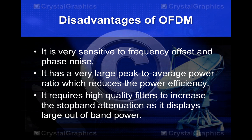The disadvantages of OFDM are: it is very sensitive to frequency offset and phase noise. It has a very large peak-to-average power ratio, which reduces power efficiency — this is one of the main drawbacks of OFDM. Finally, it requires high-quality filters to increase stop-band attenuation, as it displays large out-of-band power.